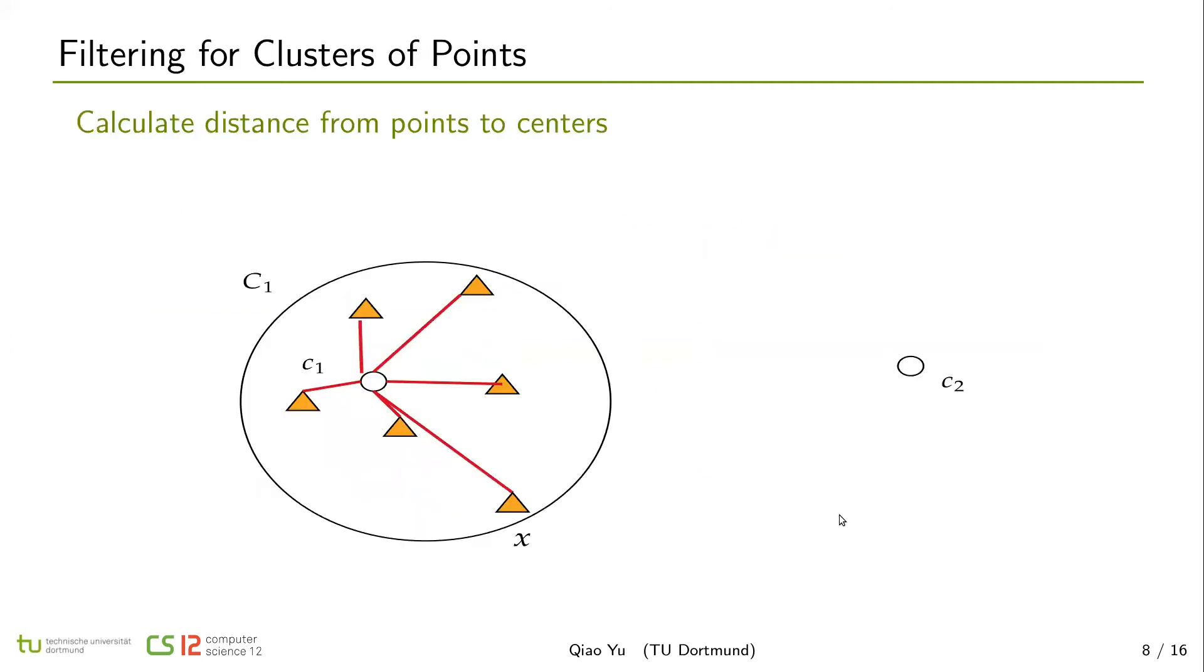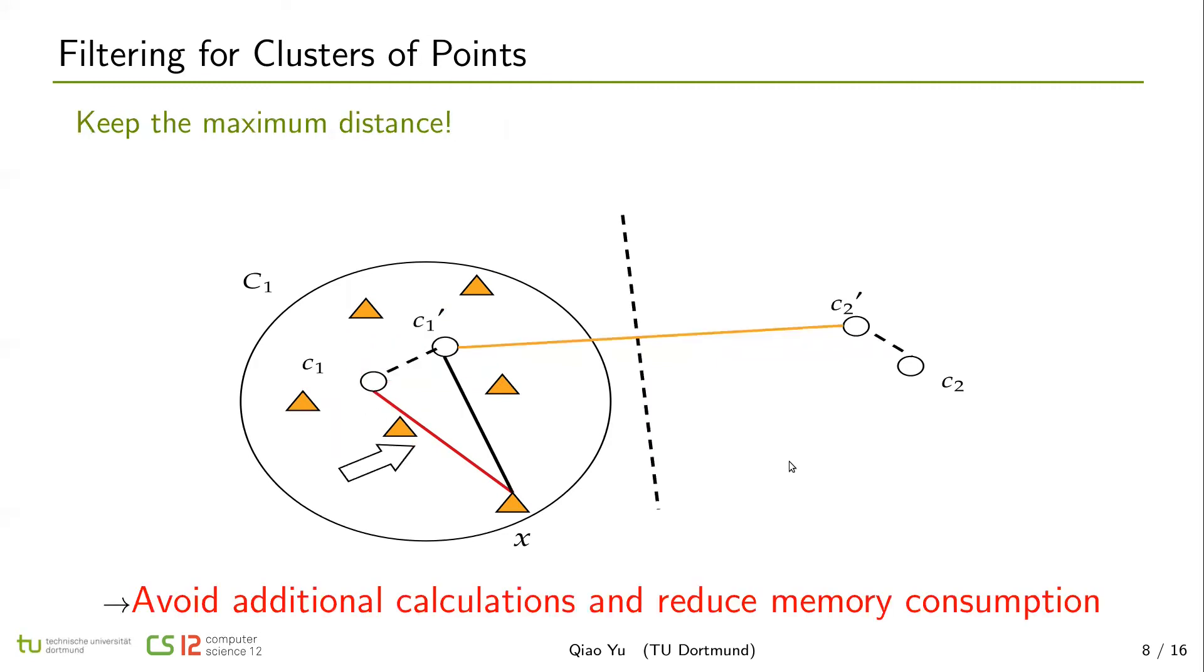In the filtering for clusters of points, for example, in cluster c1, after calculating all points to c1, in Elkan's k-means, it will store every distance from each point to center c1. However, in our filtering for clusters of points, we will keep the maximum distance x c1.